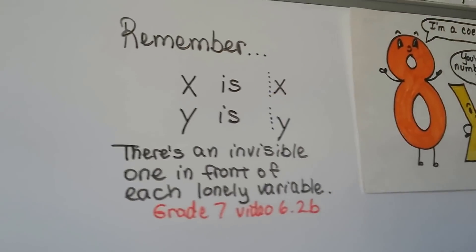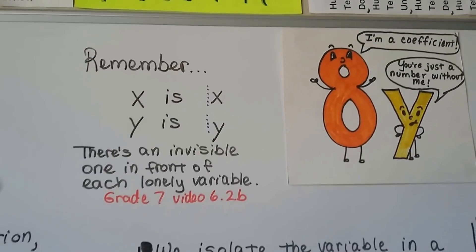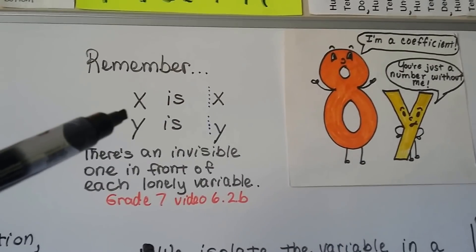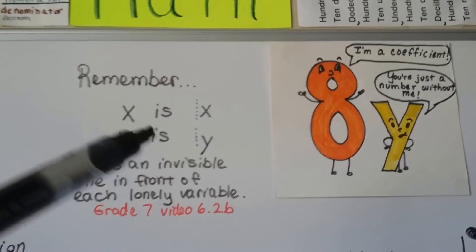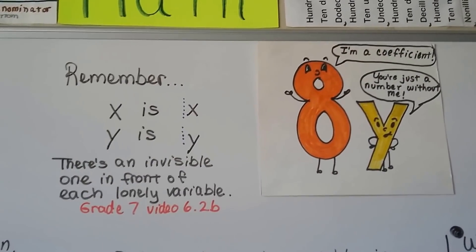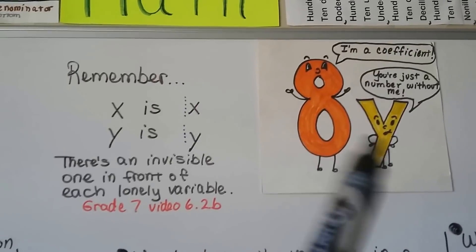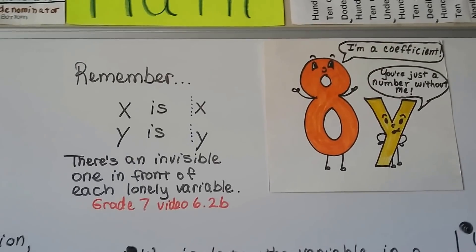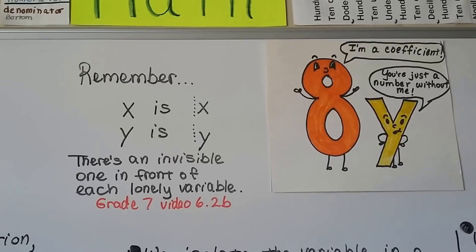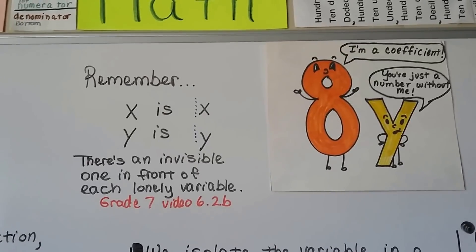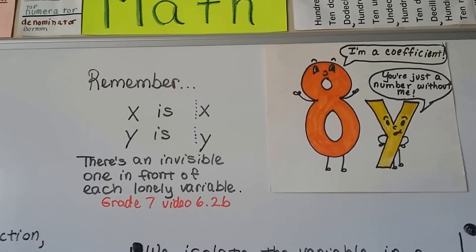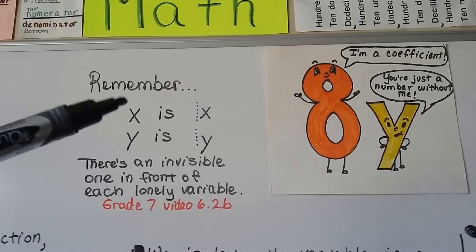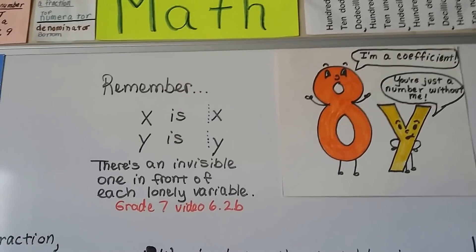Remember what we talked about before — that one coefficient. A variable is a letter that takes the place of an unknown amount, and when it's by itself, there's actually an invisible one in front of it. That's its coefficient — the number in front of the variable. We don't write it because we can see there's only one x or one y.